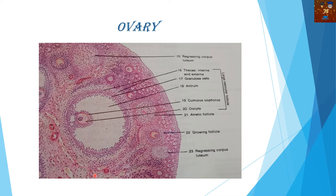This is the histological section of the ovary. You can see that this part is called the Graafian follicle, and this is the matured Graafian follicle. How can we say that it is a matured one? Because this internal region, which is called the antrum, is much more visible here, and this is the matured ovum — that is the oocyte. Here you can also see one growing Graafian follicle where the antrum is not totally visible.